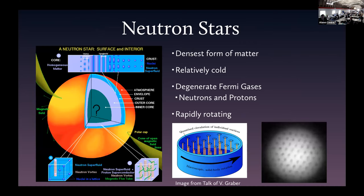The goal is to understand neutron star physics and use cold atoms as simulators. Neutron stars form when a huge amount of matter — usually at the end of a supernova — gets compressed. Gravity pushes it together, electrons are pushed into protons, and some convert to neutrons. Neutron stars are ultimately stabilized because neutrons are fermions, and so there's a Fermi degeneracy pressure that keeps them alive.